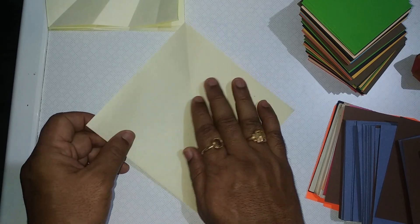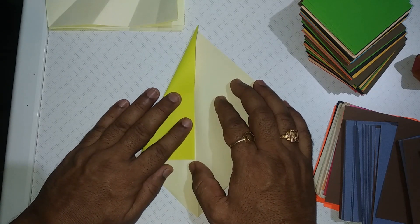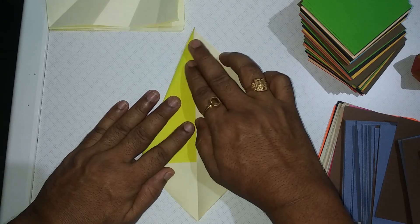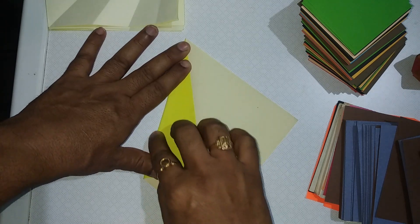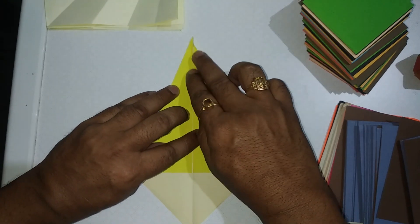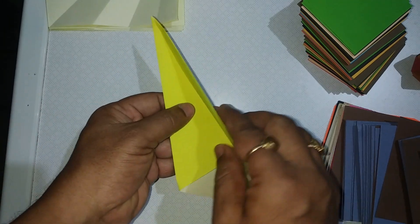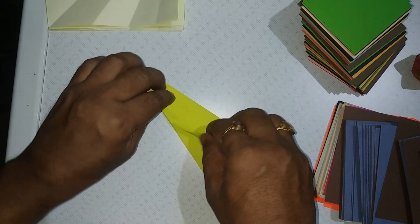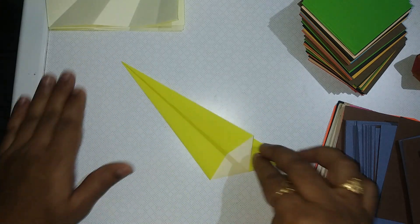Open the fold. Further bisect the angles in this way on either sides. Fold it into half. Further bisect on both sides.